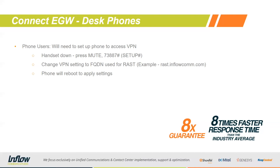For phone users, you will need to change your phones to access the VPN. With the handset down, press Mute and type 73887# (or 'Setup#'). This brings you to a setup page. In the IP Protocol options, there will be a spot for VPN — change that VPN field to the FQDN or DNS record used for the RAST service. For example, if setting up an Edge Gateway for Inflow Communications, you might use rast.inflow.com. Point your phone there, the phone will reboot to apply settings, and then it will attempt to connect, at which point you should be prompted to enter an extension and password.